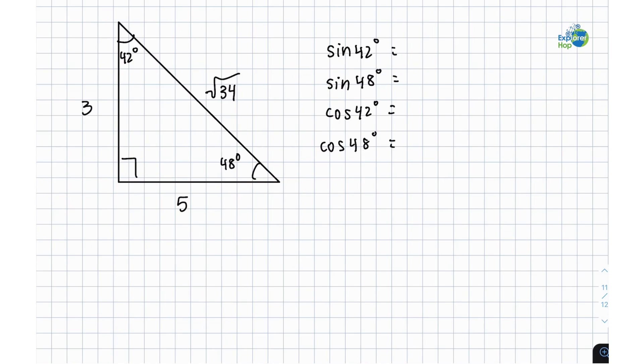We're going to start off by writing SOH CAH TOA which is going to help us remember how to find the sine and cosine of these interior angles.